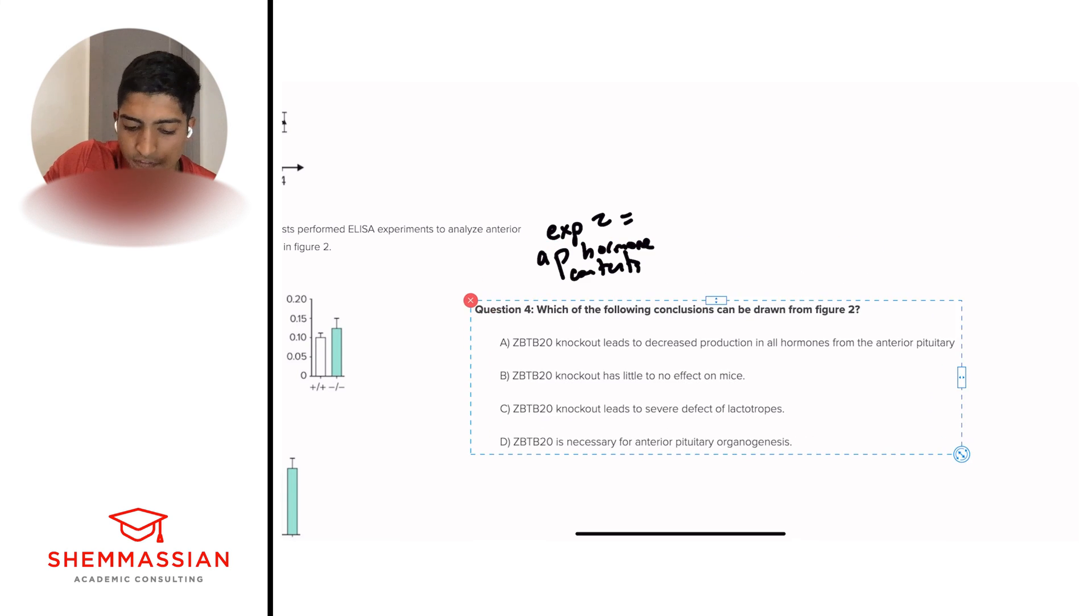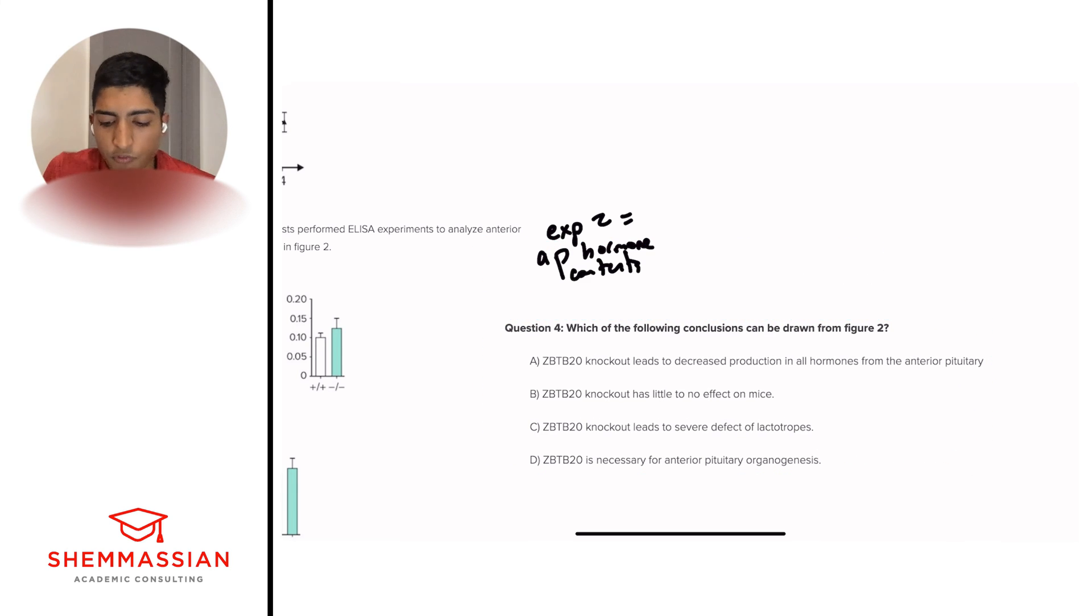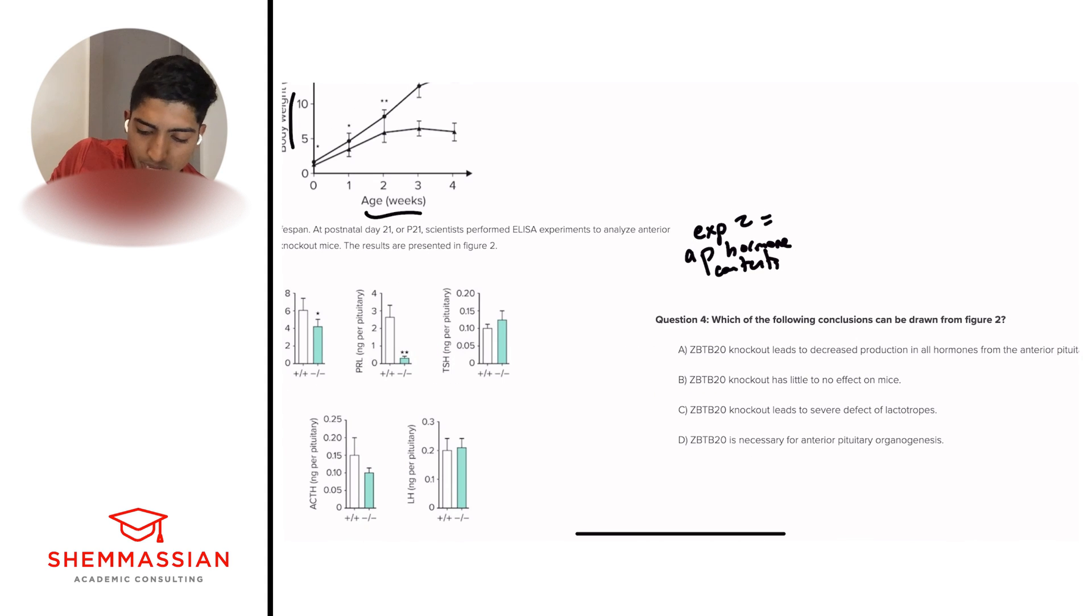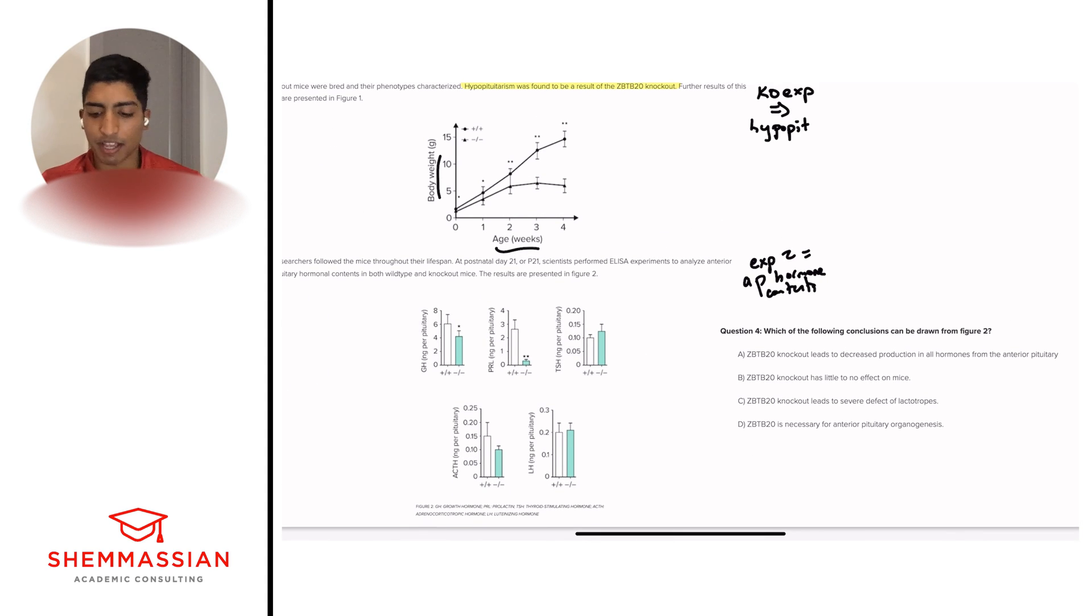And right on to question four, our final question. Which of the following conclusions can be drawn from figure two? A: ZBTB20 knockout leads to decreased production in all hormones from the anterior pituitary. B: ZBTB20 knockout has little to no effect on mice. C: ZBTB20 knockout leads to severe defect of lactotropes. D: ZBTB20 is necessary for anterior pituitary organogenesis. So we have to look at figure two. This is something directly stated by the question. So we're going right back and we see five graphs. This can be overwhelming at first, but we really are trying to focus on what is happening in the bigger picture and use that to eliminate answer choices.